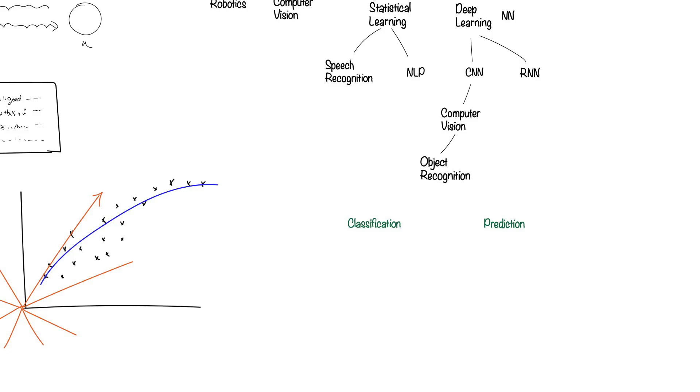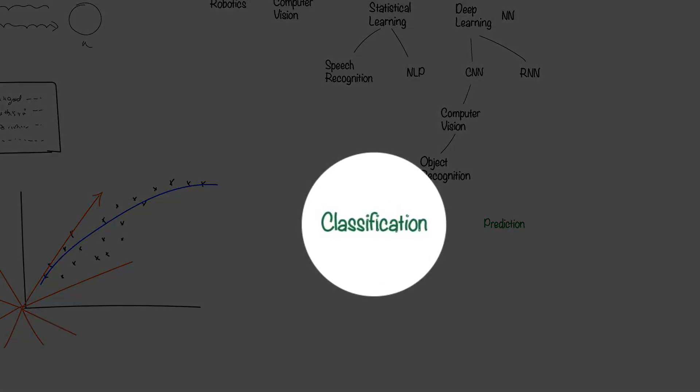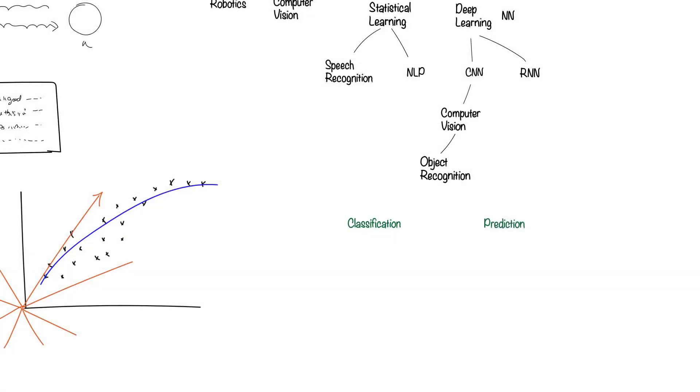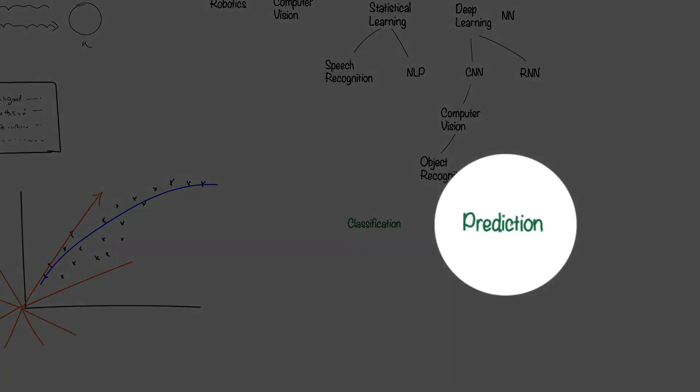As an example, when you use some information about customers to assign new customers to a group, like young adults, then you are classifying that customer. If you use data to predict if they are likely to defect to a competitor, then you are making a prediction.